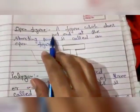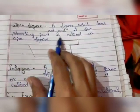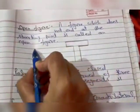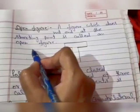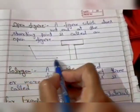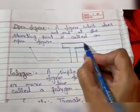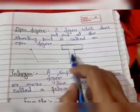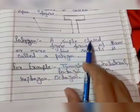Now open figure. A figure which does not end at the starting point is called an open figure. In this example, I am starting from here and ending here, so the starting point and ending point are different. This is an open figure. In this figure, I am starting from here and ending at a different point, so this is also an open figure.